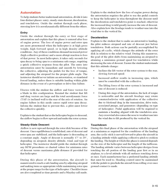Angle of descent is normally 17 to 20 degrees, depending on airspeed, density altitude, wind, and type of helicopter. The instructor should guide the student through any RFM procedures or charted values for minimum rates of descent versus maximum glide distance. During this phase, the aircraft is maneuvered to reach a safe landing area by adjusting airspeed and making turns as appropriate while maintaining rotor RPM at the proper range. Checklist items are also completed as time permits and a mayday call made. Explain how the loss of engine power during autorotation requires the pilot to use pedal controls to keep the helicopter in trim throughout the descent, otherwise the increased drag would greatly increase the rate of descent.